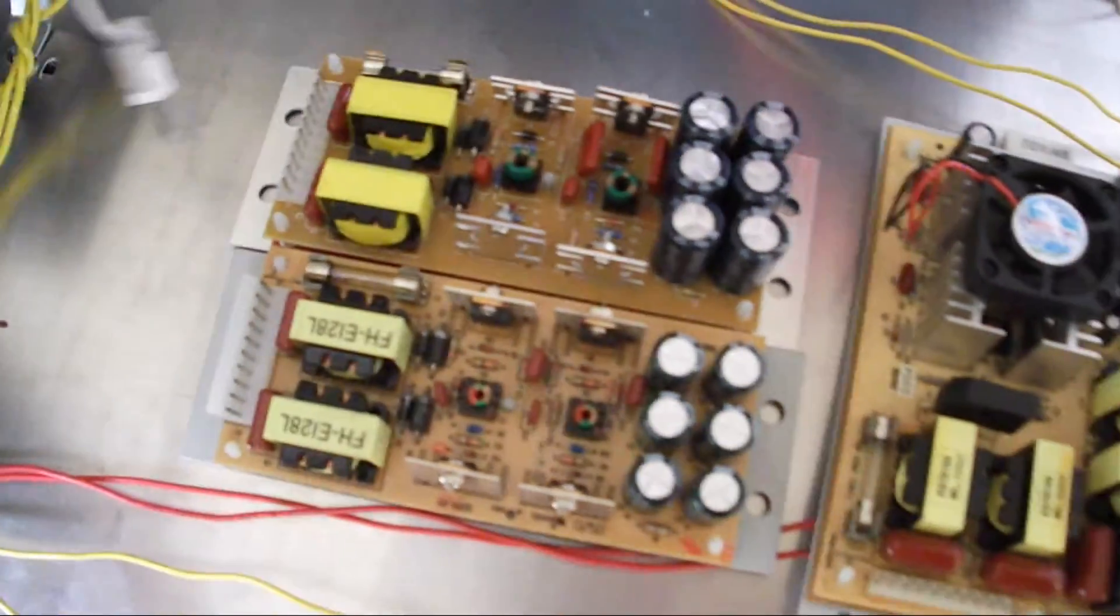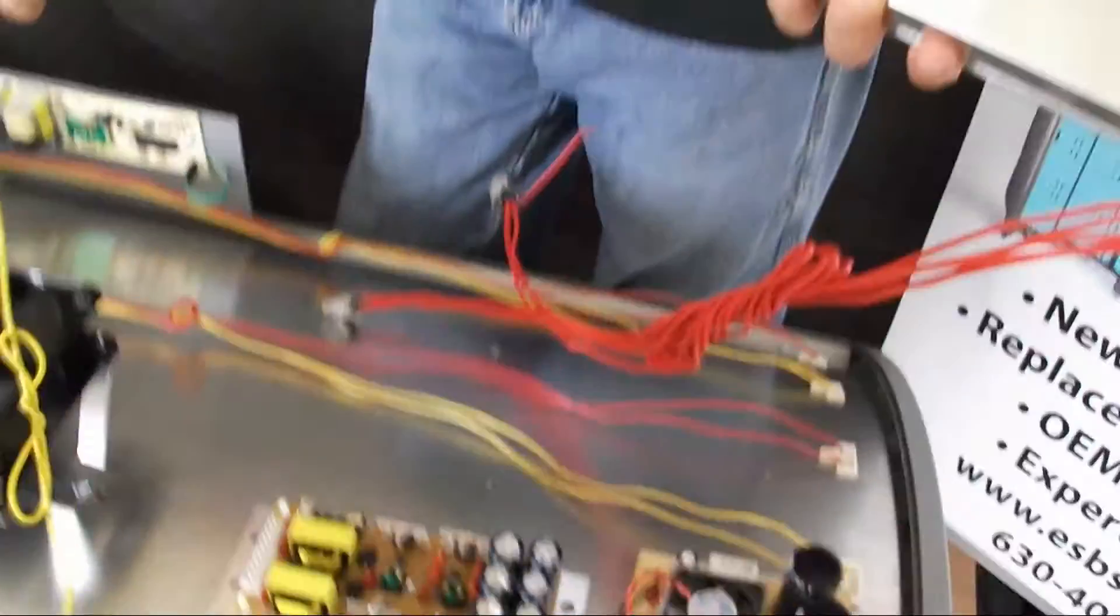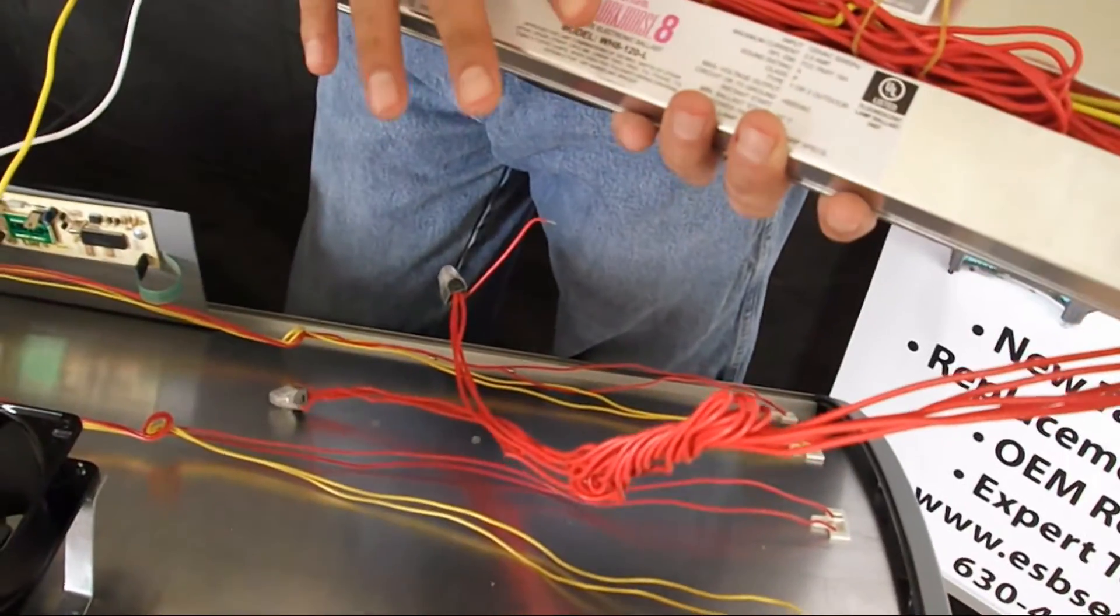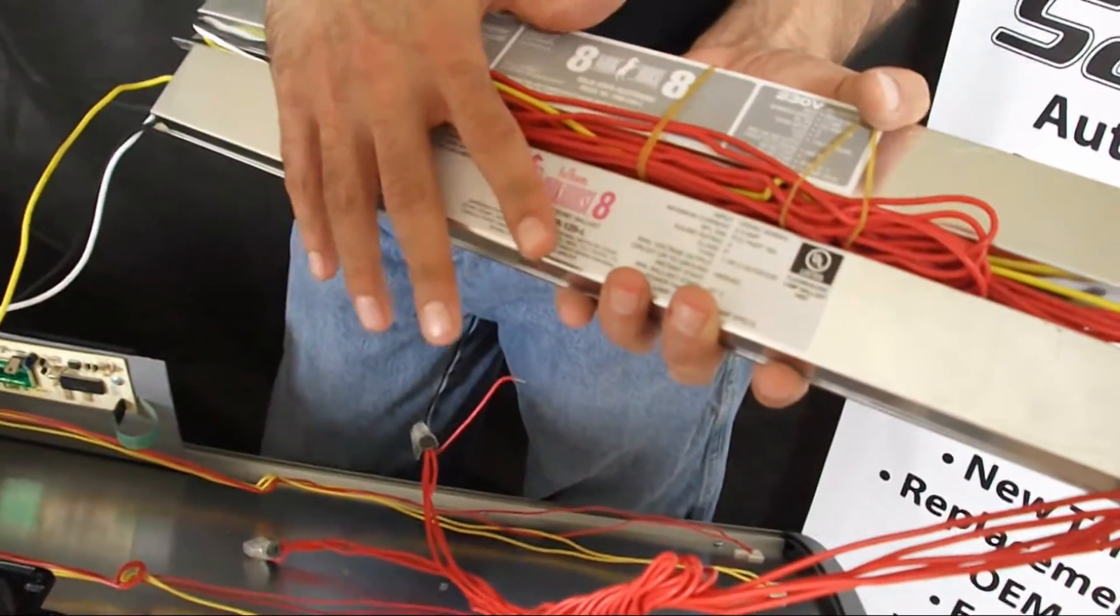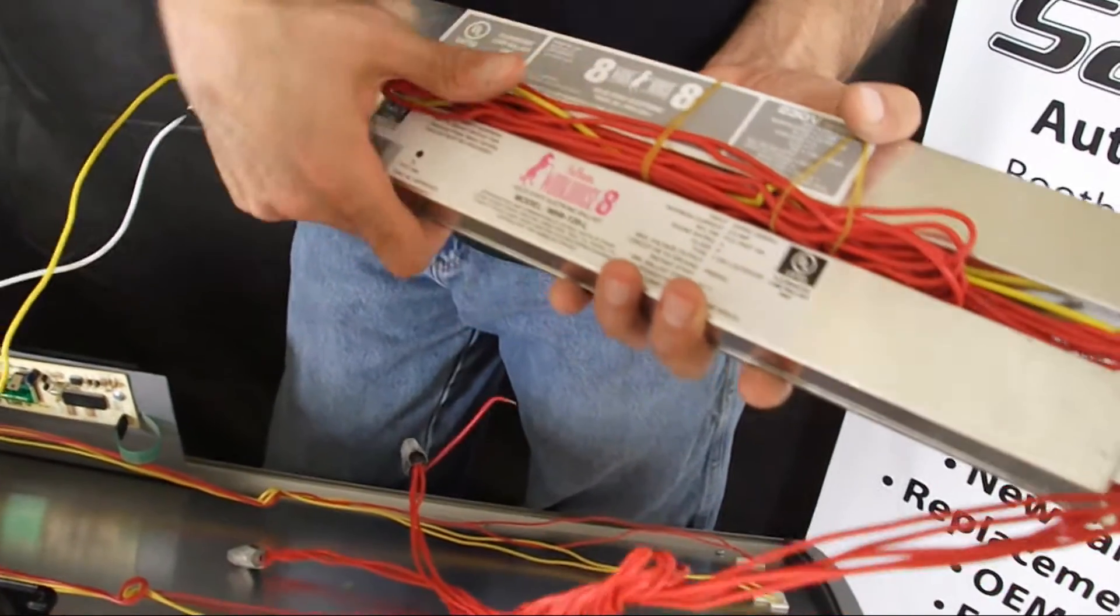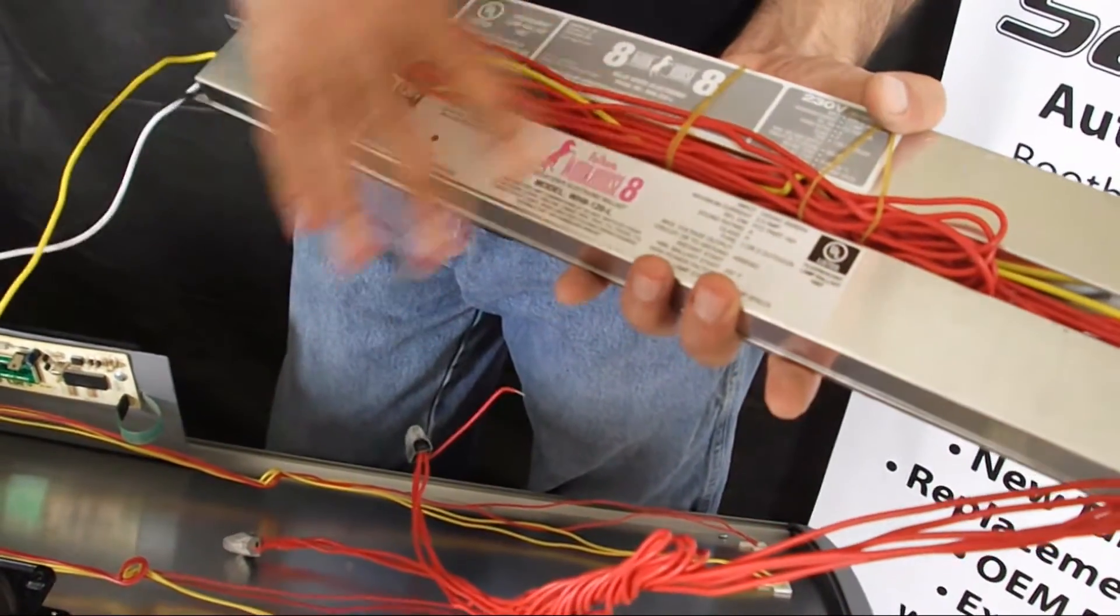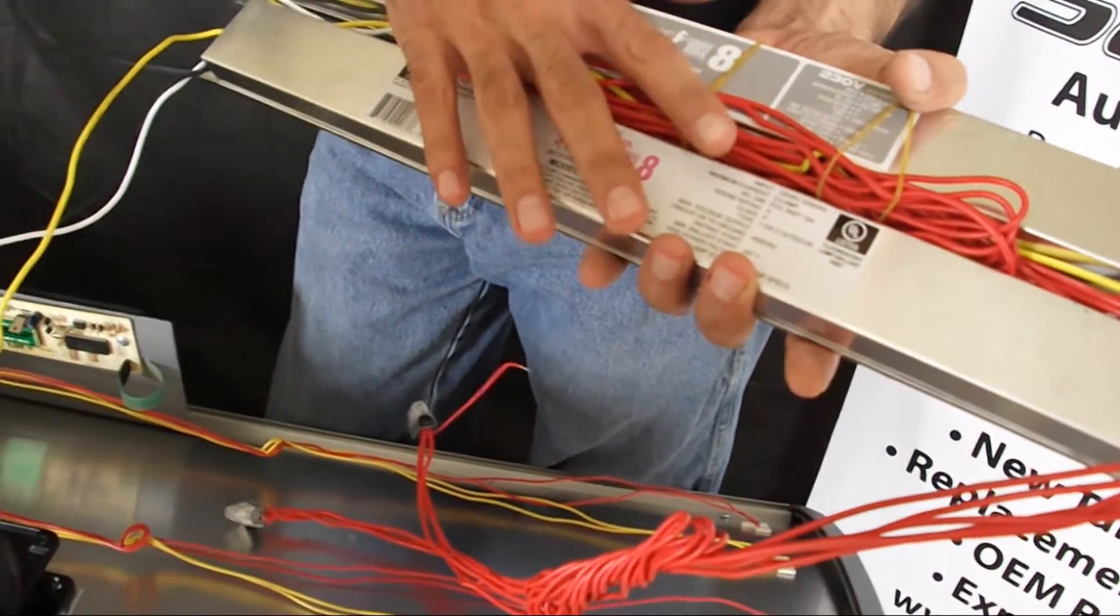The RT ballast, on the other hand, is not as sensitive. It's a lot more robust. This is actually an instant start ballast, and this can handle more of a voltage swing. And this also has open and short circuit protection built into it.